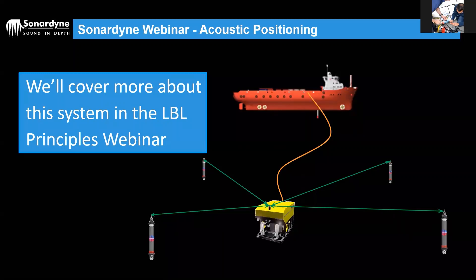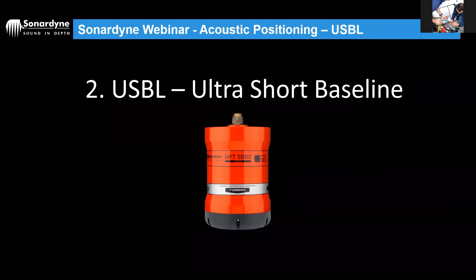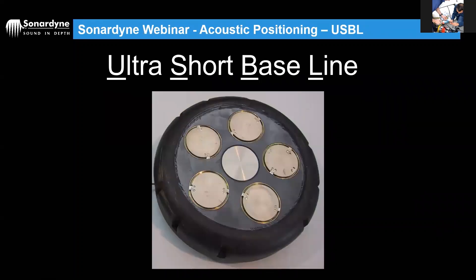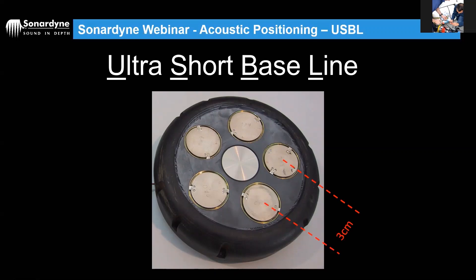Moving on to the second system: USBL — Ultra Short Baseline. In LBL, references are on the seabed. With USBL, those references are consolidated into a single transceiver head mounted on the vessel hull. The transducer at the bottom sends interrogations into the water column, and hydrophones on the head listen for responses. With LBL, the vehicle interrogates the array; with USBL, the array interrogates the vehicle.